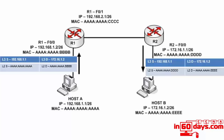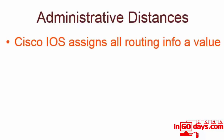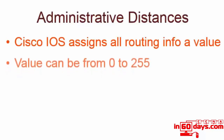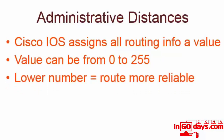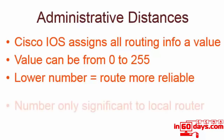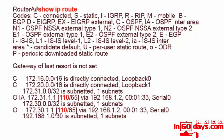Administrative distances: Cisco IOS assigns a default value for all routing information. The value can be anything from 0 to 255 - the lower the number, the more reliable the router believes that route to be. On a 'show IP route' on a router you can see in the output - I've highlighted in red - the administrative distance. The cost will be the second number, however that router determines the cost based on the routing protocol. If OSPF, the administrative distance is 110. It can be changed, however that's beyond the scope of the CCNA.